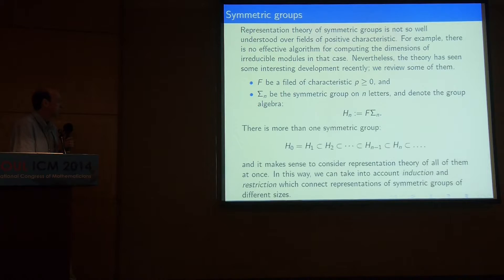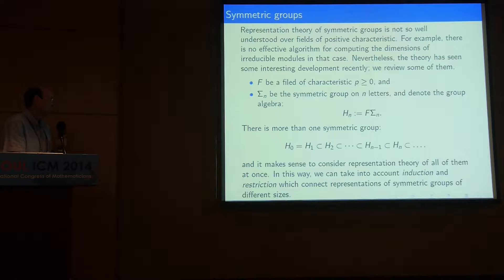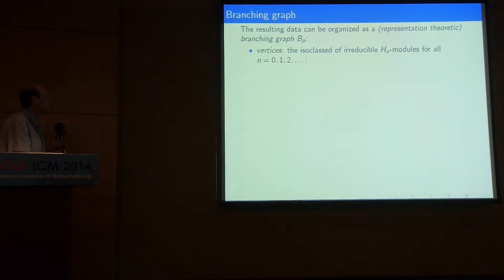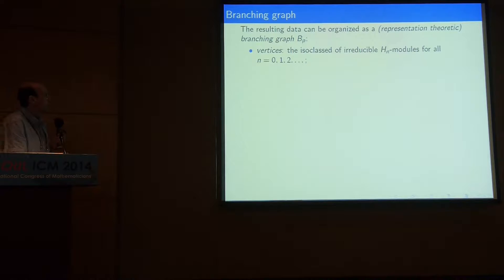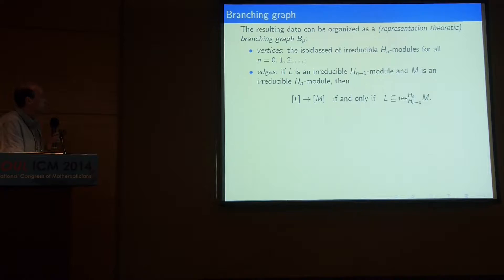Symmetric groups come in a family. They are naturally embedded, where S_{N-1} is embedded into S_N as permutations of the first N-1 letters, and that gives us embeddings of the group algebras. It is a well-known idea that it makes sense to consider all of these representations together, because in this way we can naturally take into account the relations between representation theories of symmetric groups of different sizes, which come from induction and restriction. One natural way of taking this into account is in the form of a branching graph.